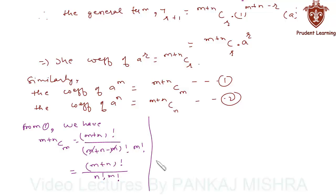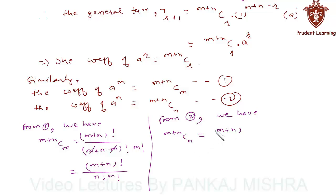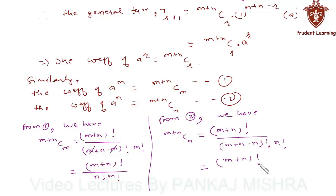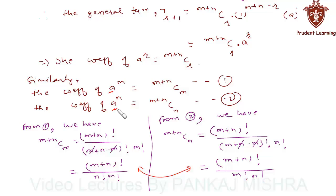From (2), we have (m+n)Cn, which equals (m+n)! divided by (m+n-n)! · n!, which simplifies to (m+n)! divided by m! · n!. These two values are equal, hence the coefficient of a^m and the coefficient of a^n are equal. This completes our solution.